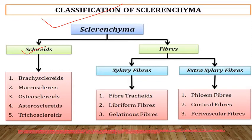Classification of sclerenchyma: there are two types — sclereids and fibers. Sclereids are small-sized cells compared to fibers. Fibers are elongated cells with tapering pointed ends, longer in size, with a narrow lumen. Sclereids have a wider lumen than fibers and are also known as stone cells. Types of sclereids: brachysclereids or stone cells, macrosclereids, osteosclereids (bone-shaped), astrosclereids (star-shaped), and trichosclereids (hair-like).